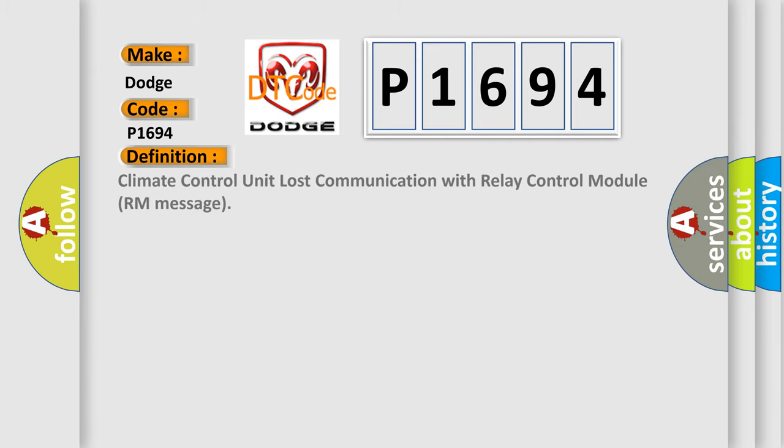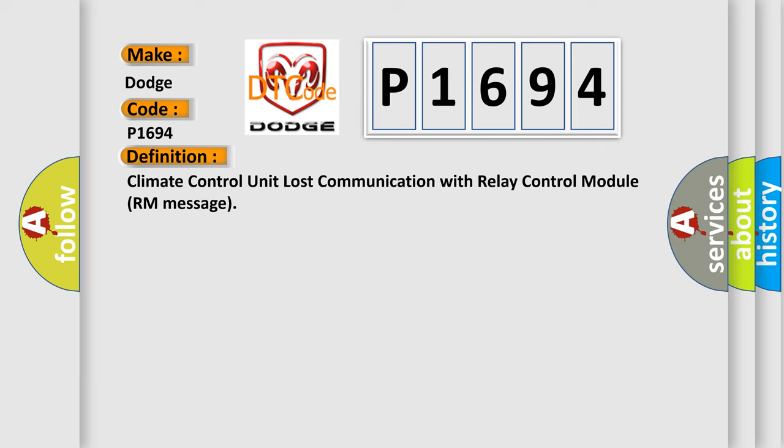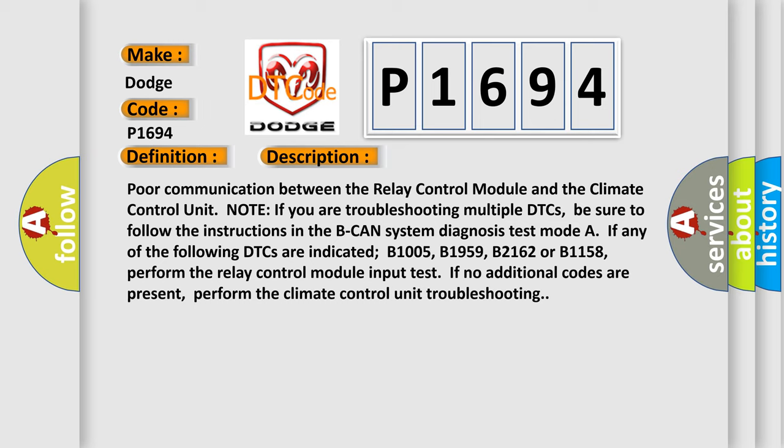The basic definition is: Climate control unit lost communication with relay control module room message. If you are troubleshooting multiple DTCs, be sure to follow the instructions in the BCAN system diagnosis test mode. If any of the following DTCs are indicated — B1005, B1959, B2162, or B1158 — perform the relay control module input test. If no additional codes are present, perform the climate control unit troubleshooting.